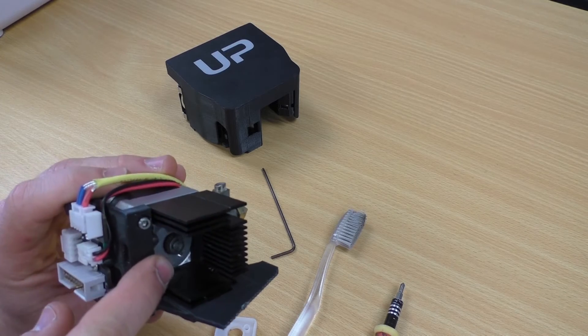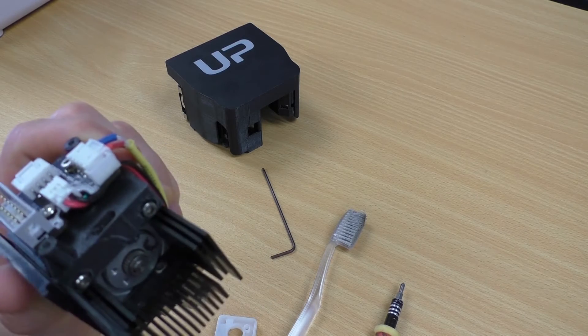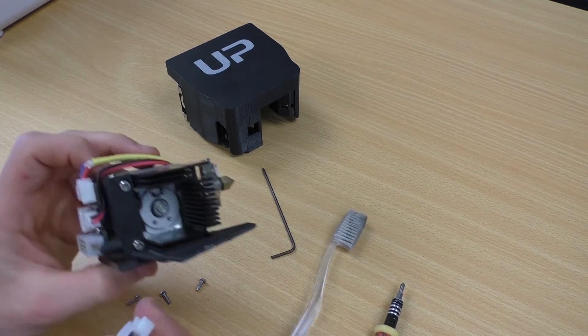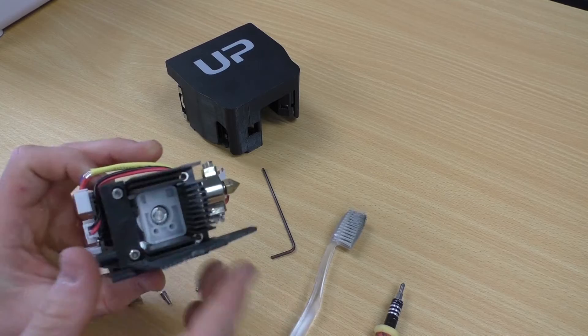If you've got some really stubborn parts in between these teeth, maybe use something sharp like a pair of tweezers to flick them out. Right, but we'll put the cover back on and we'll put our printhead back together.